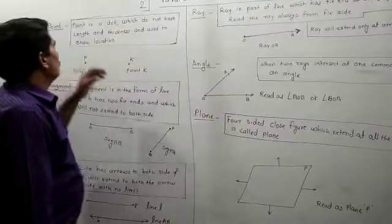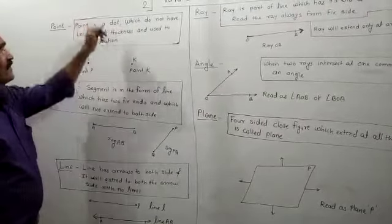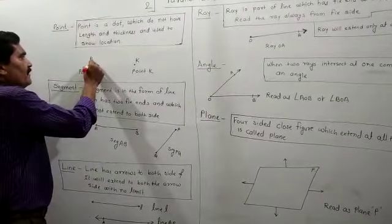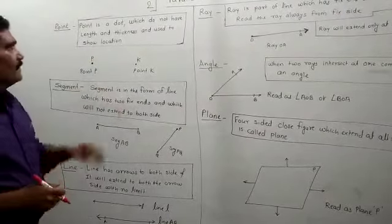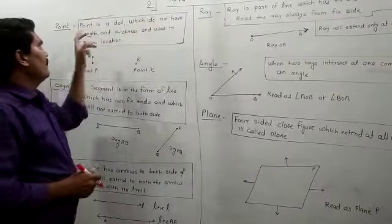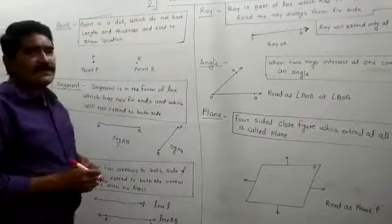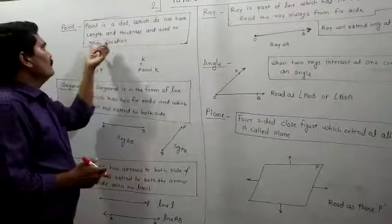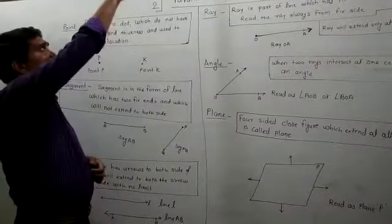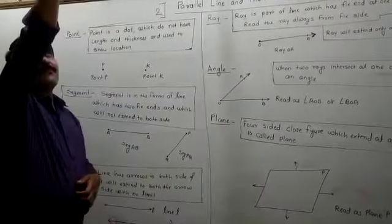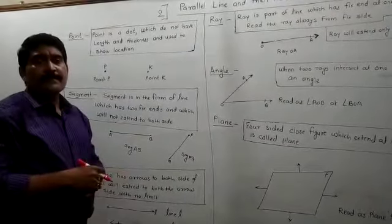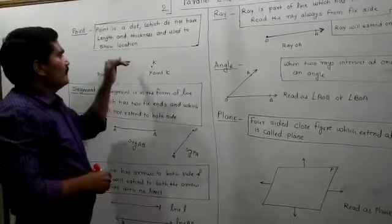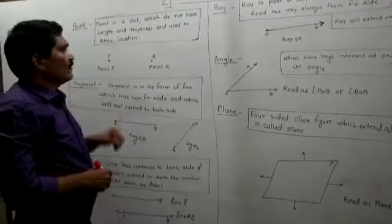The first point is: what is the meaning of a point? A point is a tiny dot. This tiny dot is called a point. A point is a dot which does not have length or thickness. It is used to show a location — for example, the point where you would feed a fan or stick a sticker. You use a point to show a location.